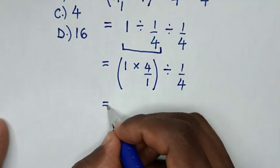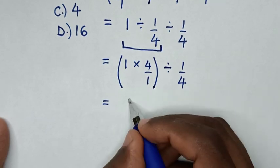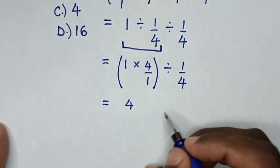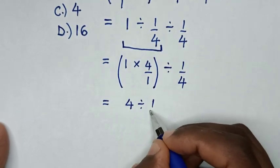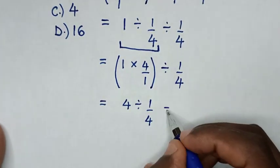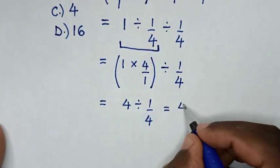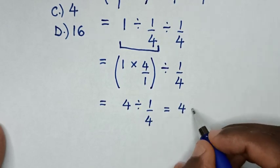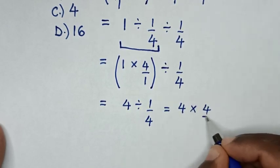Then, it will be equal to 1 times 4 is 4, then divided by 1 over 4. Then, it will be equal to 4 divided by 1 over 4, which is same as times 4 over 1.